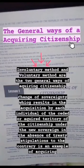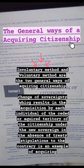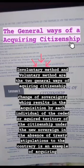General ways of acquiring citizenship. The involuntary method and the voluntary method are the two general ways of acquiring citizenship. A transfer of sovereignty, which results in the acquisition by each individual of the ceded or acquired territory of citizenship under the new sovereign, in the absence of treaty stipulation to the contrary, is an example of acquiring citizenship.